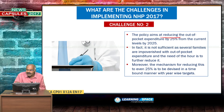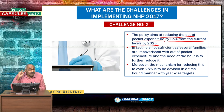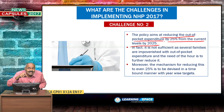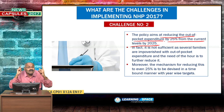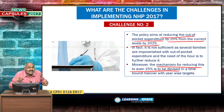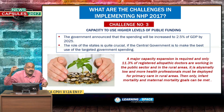Challenge number two: the policy aims at reducing out-of-pocket expenditure by 25% from current levels by 2025. But in my opinion, that is not sufficient, as several families are impoverished and out-of-pocket expenditure is the biggest problem society faces today. The need is to further reduce it through state intervention and insurance companies. A mechanism for reducing it even to 25% must be devised in a time-bound manner with year-wise targets.